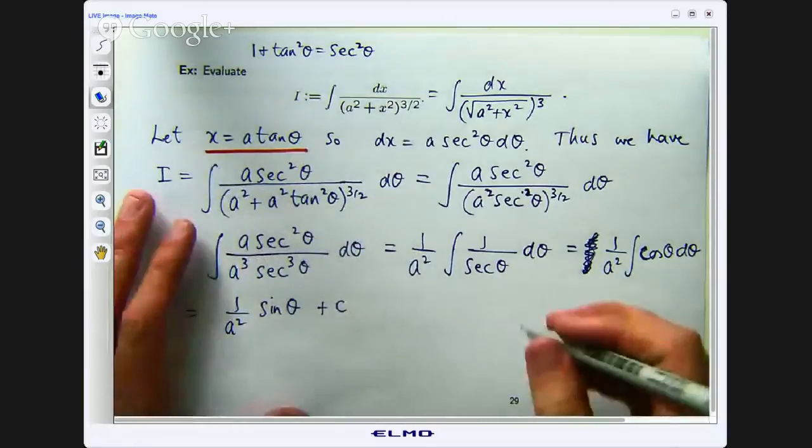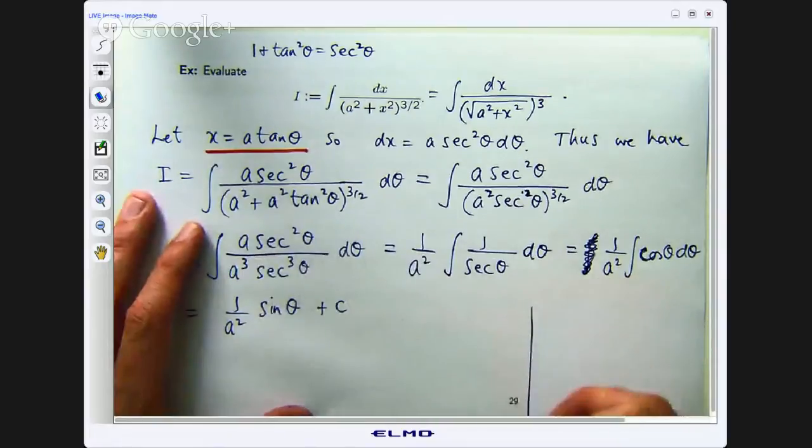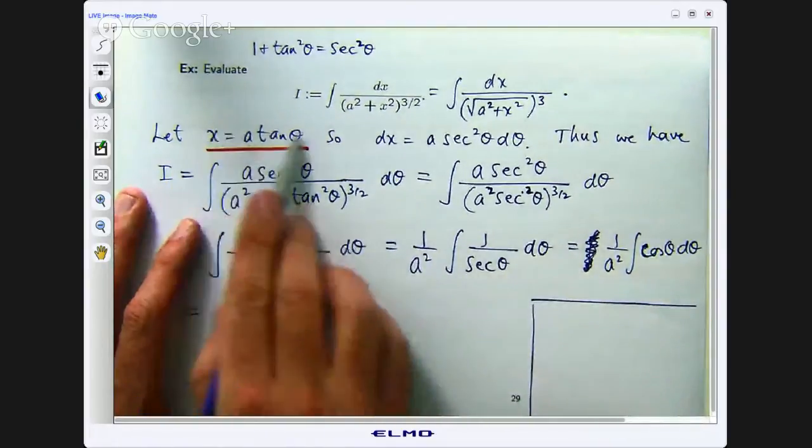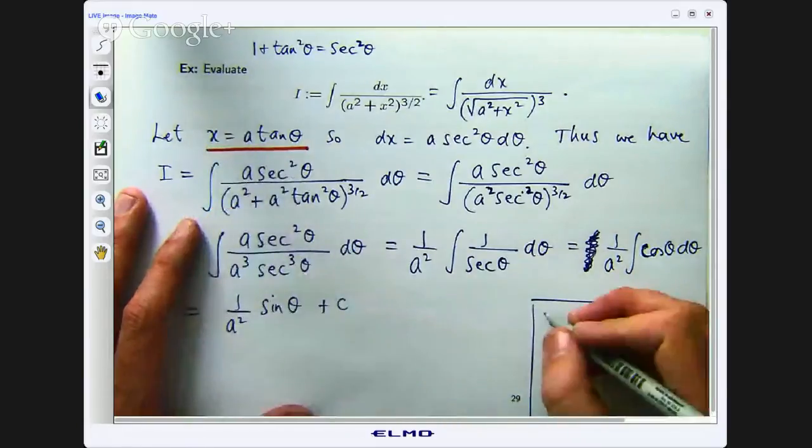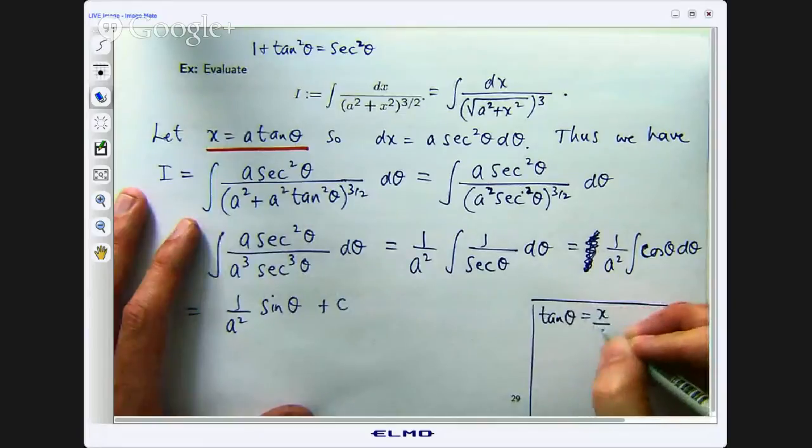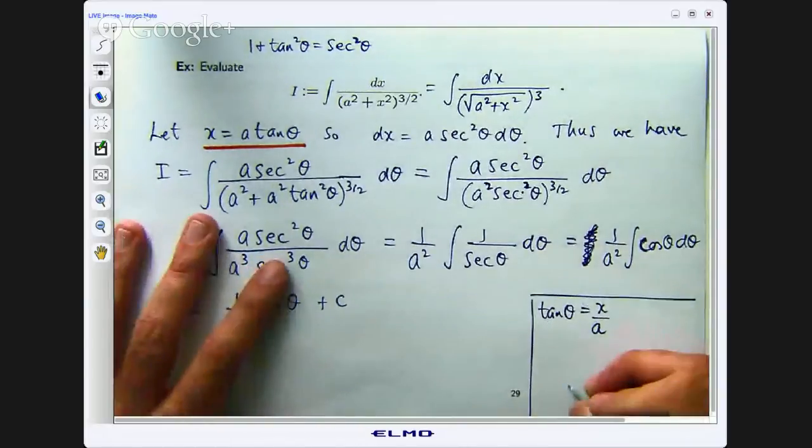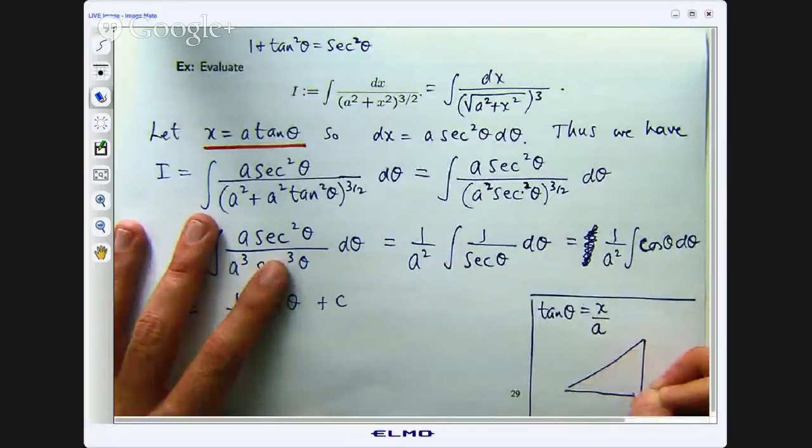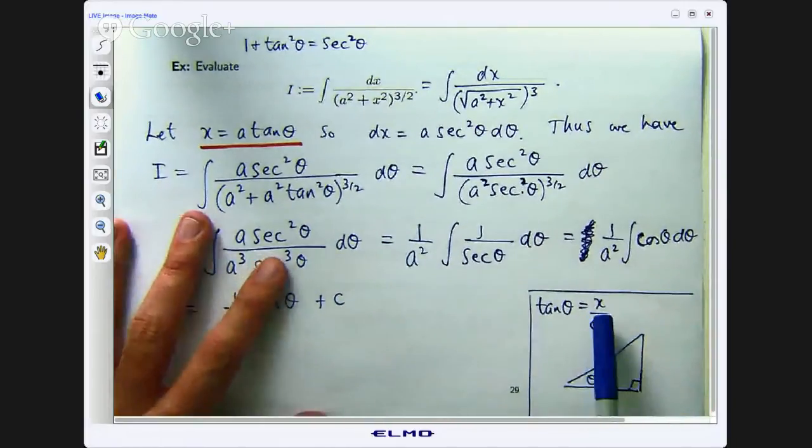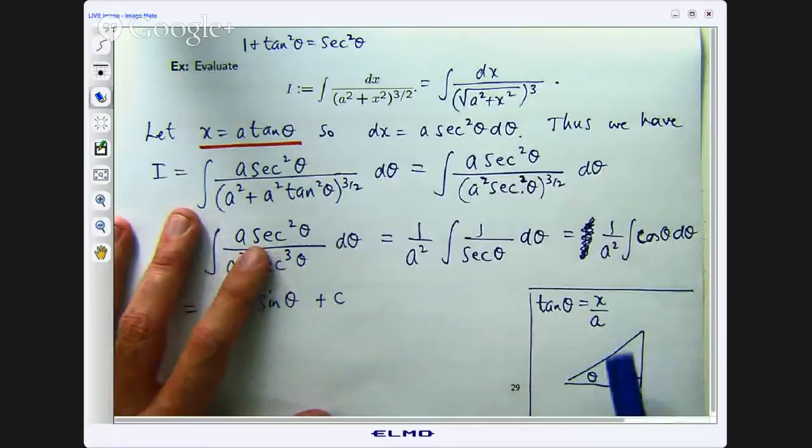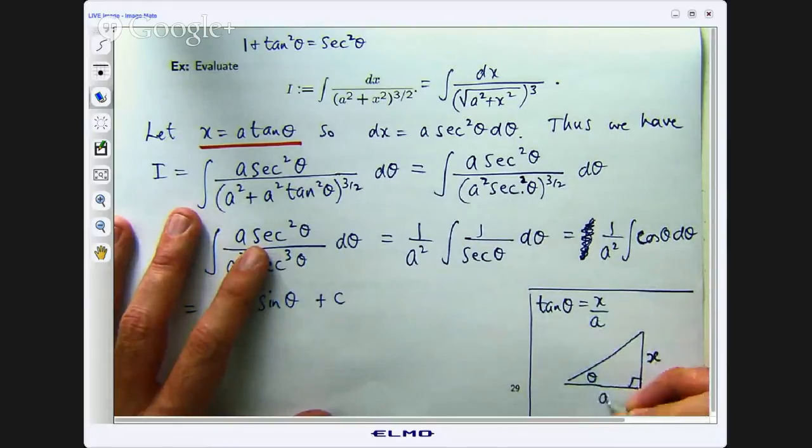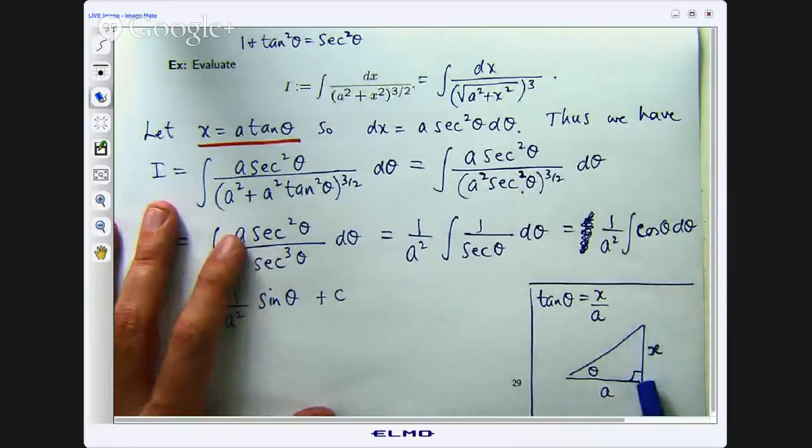Well let us go back to our original substitution. I am going to draw a little right angle triangle over here based on that substitution. Now x equals a tan theta. If I rearrange that I get tan theta equals x over a. Now from basic trig I know if I have a right angle triangle and I let one of the angles be theta. This basically says that tan of this angle equals x over a. Opposite over adjacent. So the opposite length will be x and the adjacent length will be a.